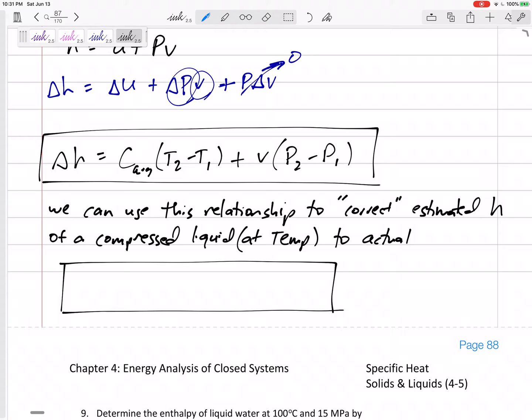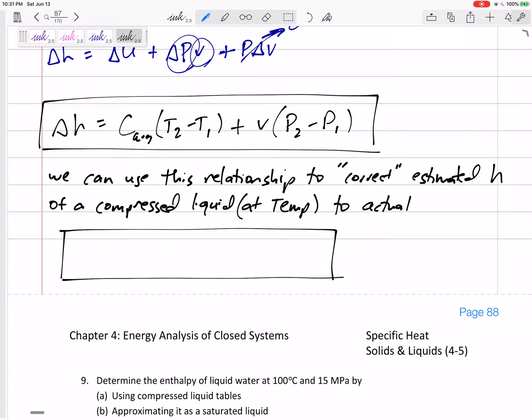Plus v delta P. This is similar. Do you remember the equation we briefly had that h is approximately equal to h of the saturated liquid at that temperature, and then we had this correction factor v of the saturated liquid at that temperature times P minus P sat? That's kind of similar to this correction factor that many times we neglect it, but if we want to be more precise, we can calculate that right there.